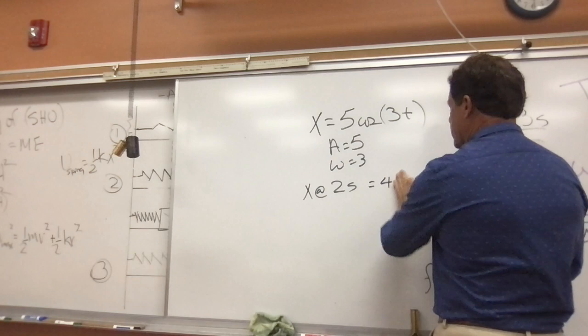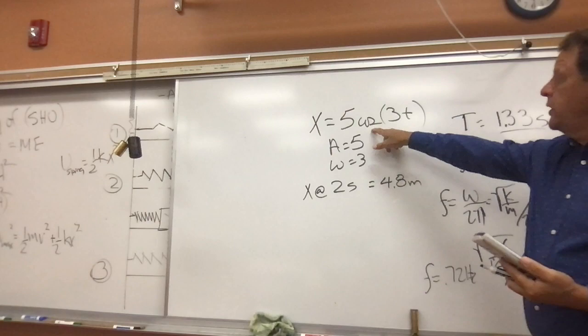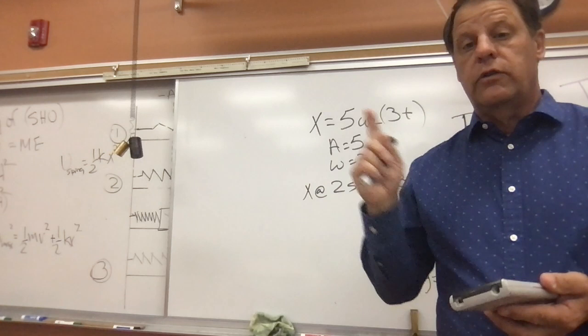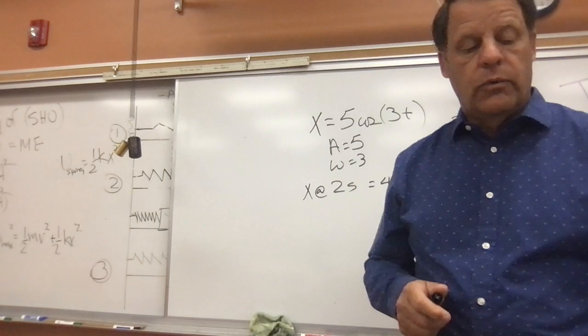Our position at two seconds would be equal to about 4.8 meters. If you put in cosine of 3 and get an error message, your calculator is not in radians — it is in degrees. For these equations, we need the calculator to be in radian mode.